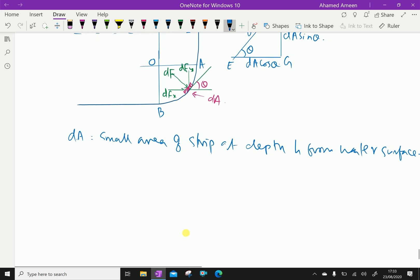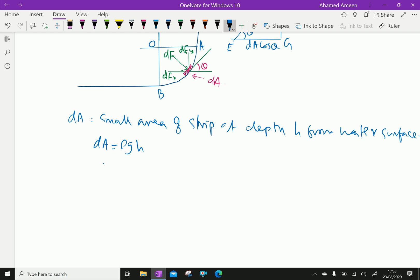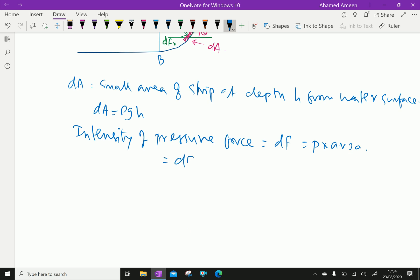Now, the pressure at depth h is P = ρgh. The intensity of pressure force on this area dF equals P times area, which equals ρgh times dA.